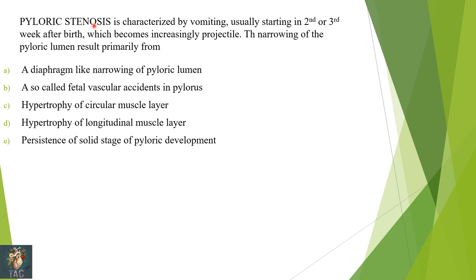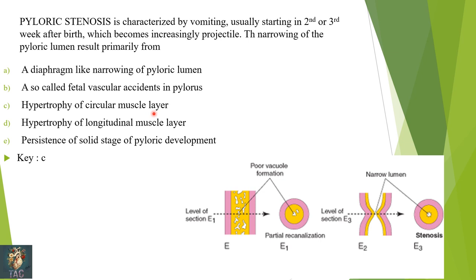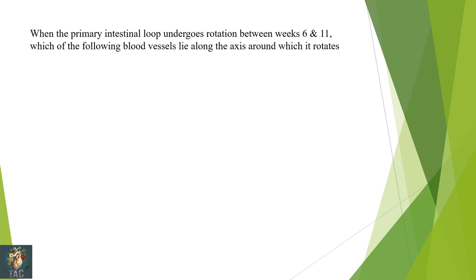Looking at this diagram of pyloric stenosis, you can see the inner circular muscle layer and outer coat. There is partial re-canalization or absence of re-canalization that leads to pyloric stenosis. In such a case there is hypertrophy of the circular smooth muscle cells, so the correct option is hypertrophy of the circular smooth muscle cells.